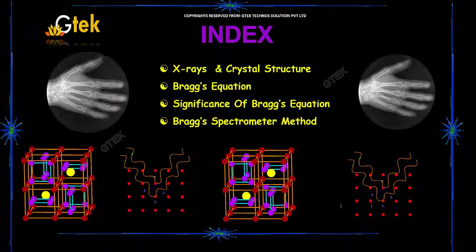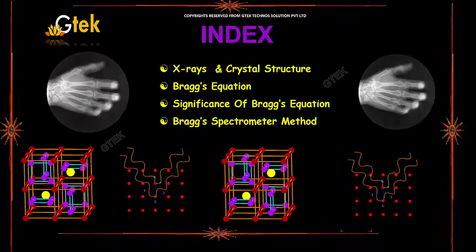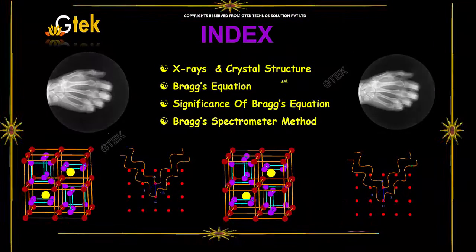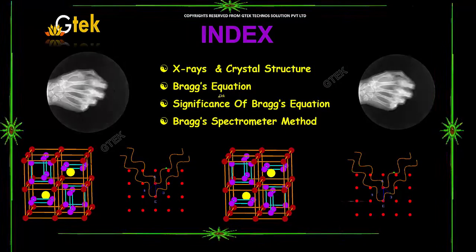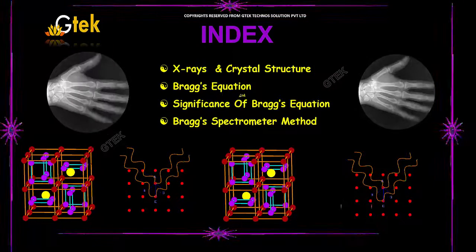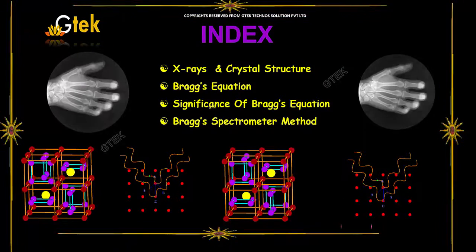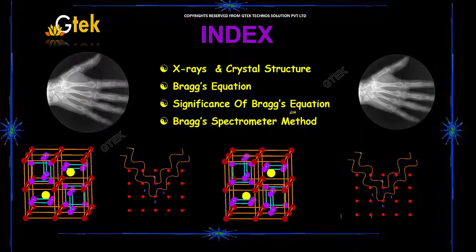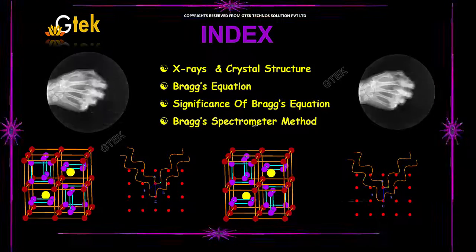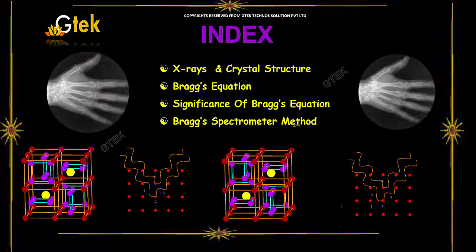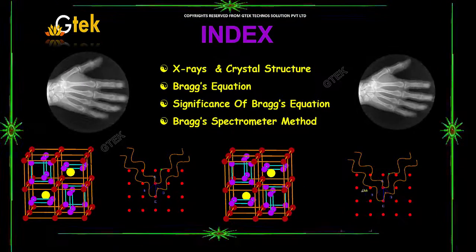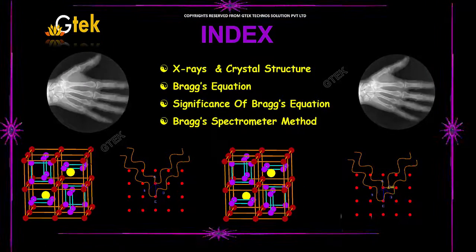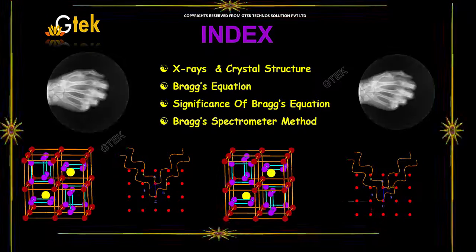Here is the index. I am going to talk about the X-rays and crystal structures, followed by Bragg's equation, the significance of Bragg's equation, and Bragg's spectrometer methods. These are the areas we are going to look into in detail.